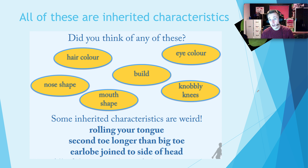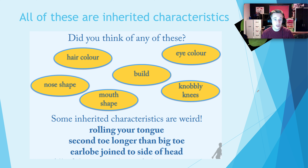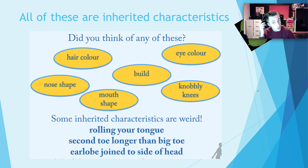Some other characteristics are a little bit weird. For example, rolling your tongue — you can only do that if either your mum or your dad can do it. It's inherited. If neither of them can do it, you won't be able to. If your second toe is longer than your big toe, apparently that's inherited too. If your earlobe is joined to the side of your head, that has been inherited from either your mother or your father.